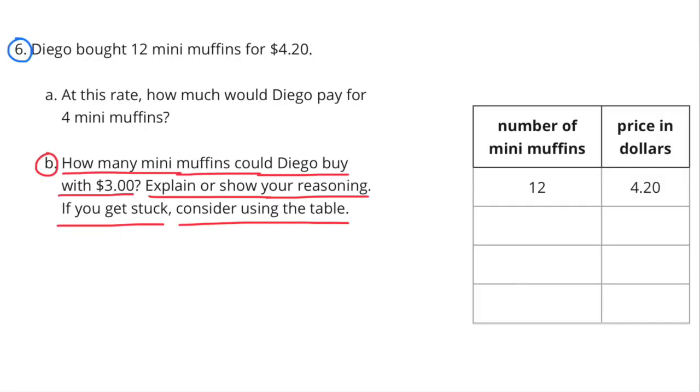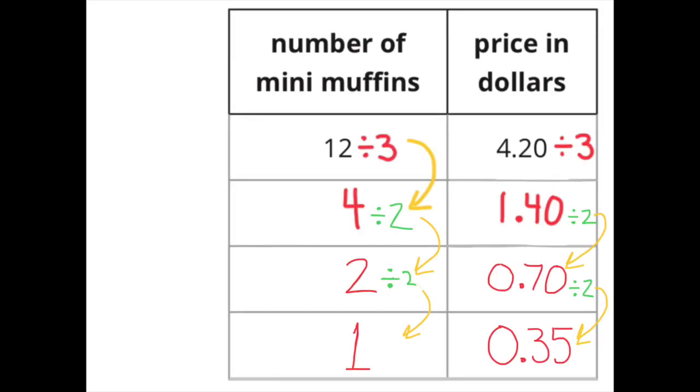B. How many mini-muffins could Diego buy with $3? Explain or show your reasoning. If you get stuck, consider using the table. 12 ÷ 3 = 4. 4 ÷ 2 = 2. 2 ÷ 2 = 1. And I have to do the same thing to the column on the right with the price.